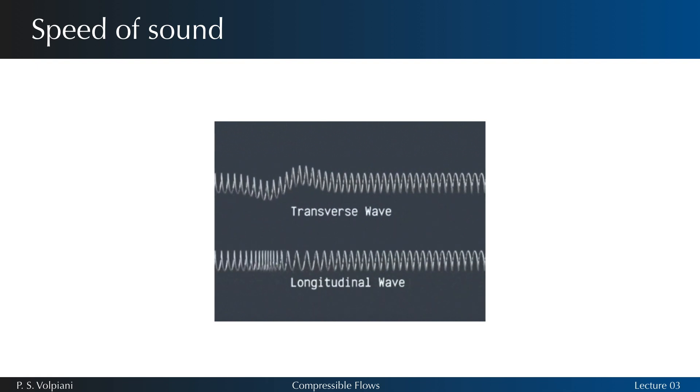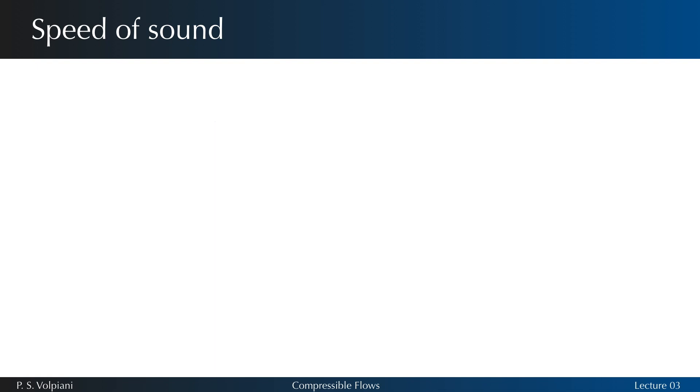Now let's see how we compute the speed of sound. Sound or acoustic waves are longitudinal waves, that means they have the same direction of vibration as the direction of propagation, and they result from an oscillation of pressure. Let's consider a sound wave moving into a stagnant gas. To do so, consider a long constant area tube filled with a fluid and having a piston at one end.